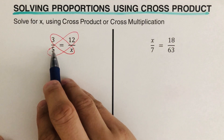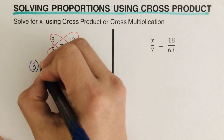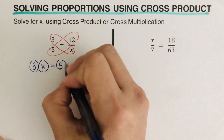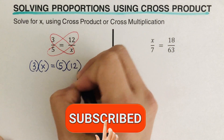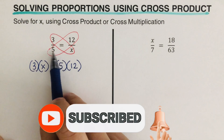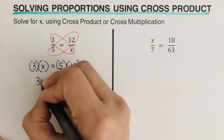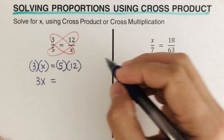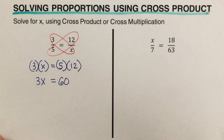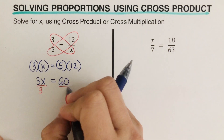In this first problem, we get three times x, written as 3x, is equal to five times twelve. I multiplied three and x on one side, and five and twelve on the other. So this comes out to 3x is equal to 60. We want x by itself, so we divide both sides by three.